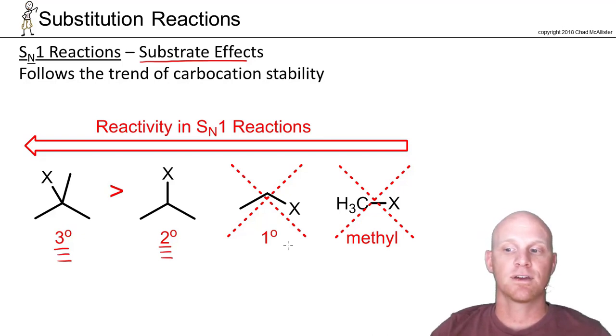The exception is if your carbocation ends up being resonance stabilized, either because you had an allylic halide or a benzylic halide. But outside of that, primary and methyl carbocations generally don't form, and you definitely aren't doing an SN1 reaction with those primary and methyl halides.